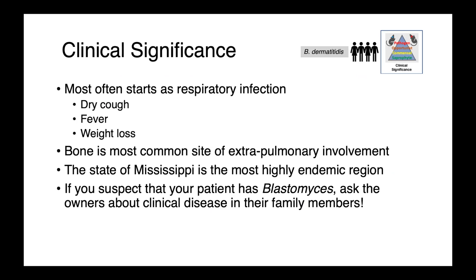In people, blasto infections most often start in the respiratory tract with a dry cough, fever, and weight loss. Unlike in dogs, bone is actually the most common site of extra-pulmonary involvement. The state of Mississippi is recognized as the most highly endemic region in North America, so for anyone practicing there, this should absolutely be on the differential diagnosis list. If you suspect your patient has blastomycosis, ask owners about clinical disease in their family members, since dogs may serve as a sentinel for human exposure.